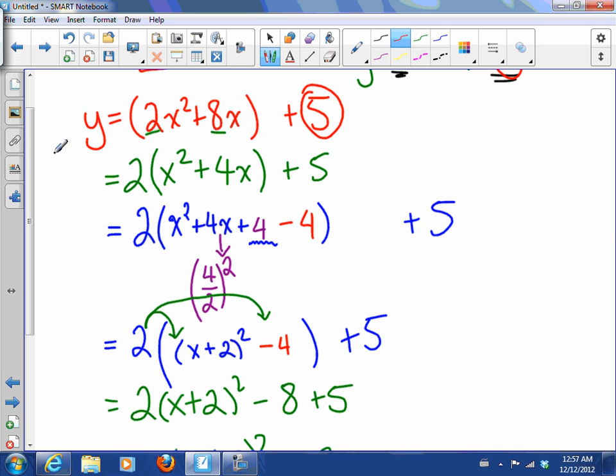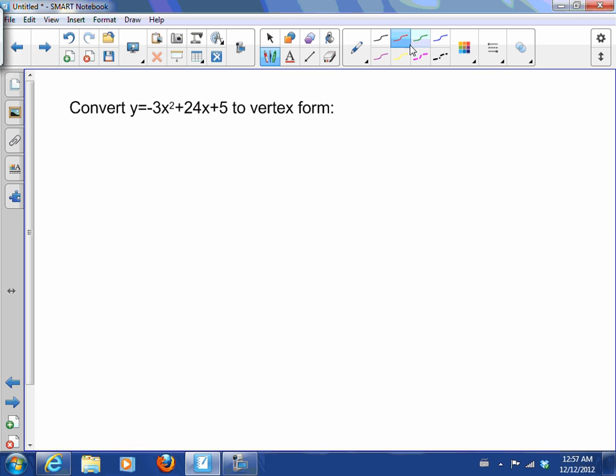So we will talk about that a lot more. Let's see another example. Here, remember we're going to block off the first two and then we're going to common factor the a value, so -3 this time, and I'll be left with x² - 8x + 5.